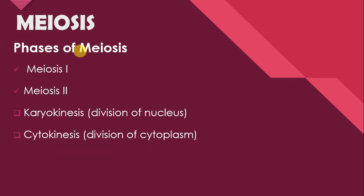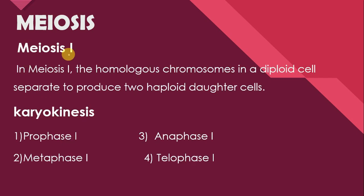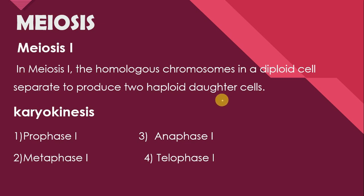Next are the phases of meiosis. Meiosis takes place in two steps: Meiosis 1 and Meiosis 2, which are further divided into two phases — karyokinesis, that is the division of nucleus, and cytokinesis, that is the division of cytoplasm. In Meiosis 1, the homologous chromosomes in a diploid cell separate to produce two haploid daughter cells. Meiosis 1 mein diploid parent cell se two haploid daughter cells form karte hain.